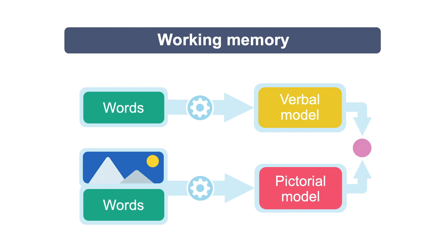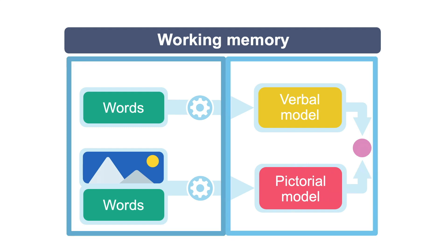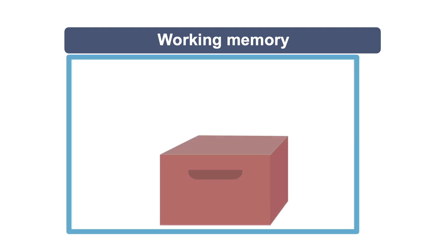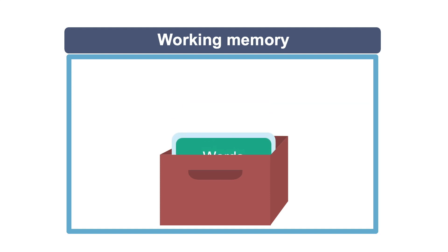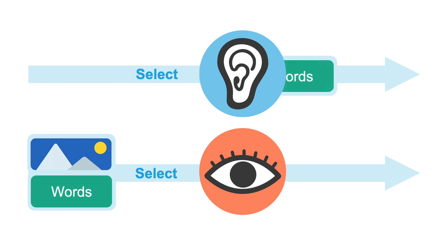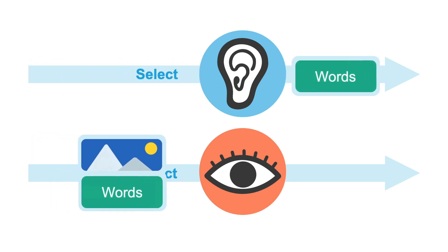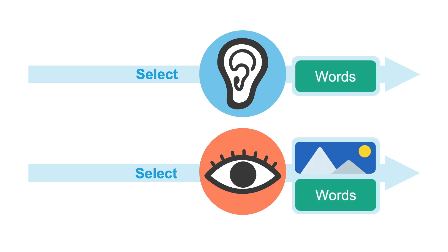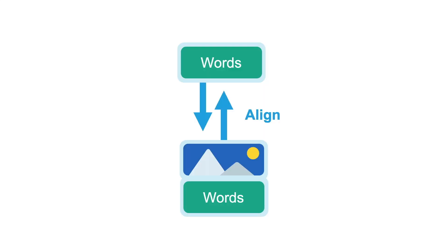This schematic of our working memory shows that it has two parts. This part is where our working memory stores words and images before it processes them further. The words that came in through the ears and the words and images that came in through the eyes now have to align with one another.